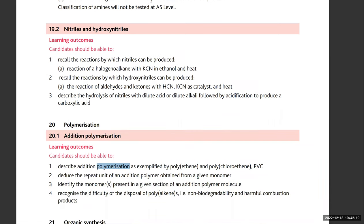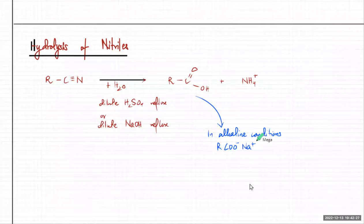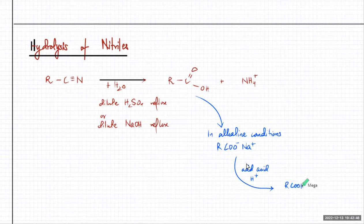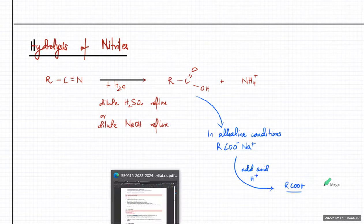If you want the acid back again, you add acid - that's known as acidification. Your Na⁺ will get replaced by H and you will get the carboxylic acid back again. Under alkaline conditions it's basically neutralizing the excess NaOH, so you'll obviously get back to carboxylic acid.